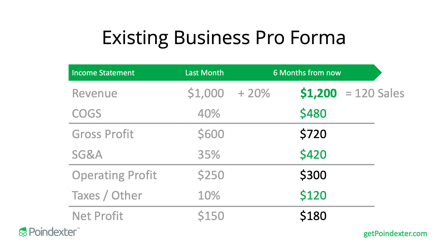From there, we can calculate all of our profit margins, and that's the pro forma income statement for an existing business. If you wanted to do this on a month-by-month basis, you would approach it the same exact way — from six months out, you could forecast another 20% for the next six months and arrive at a forecast for 12 months out. Just keep that same process going, and that's essentially how you approach it.